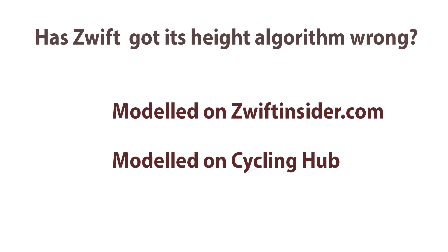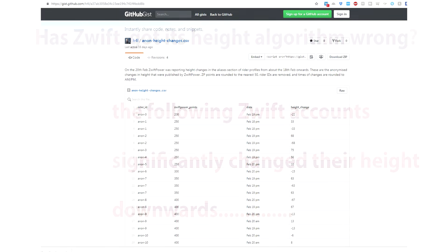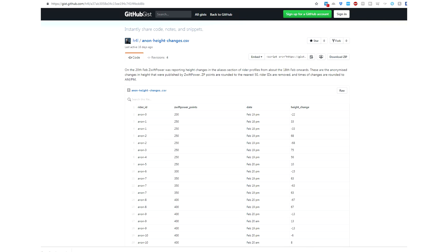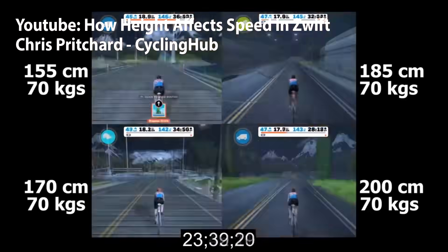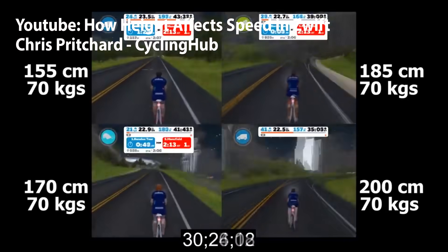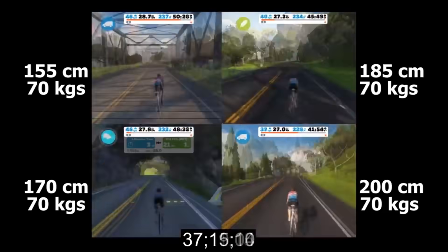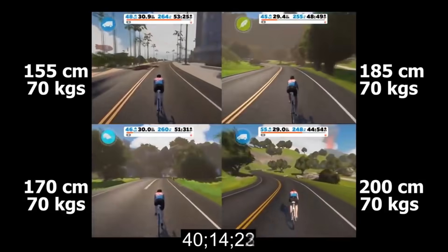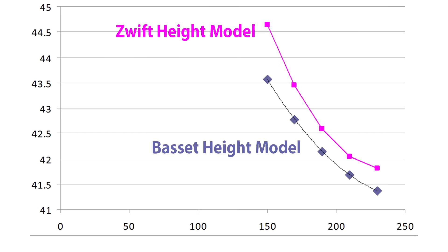So why, after all that, does the Zwift model look so odd if we return to it? We've modeled it and Zwift does seem to use the Bassett formula for CDA — and based on the information at hand, it's not an incorrect model. The reason it looks odd is because when you change your height in Zwift, the other natural anthropomorphic variables that normally change with height don't change. You're purely adjusting height. So when you decrease your height, your power and your body mass stay the same, but you get a very large effect on CDA with effectively no inherent losses.